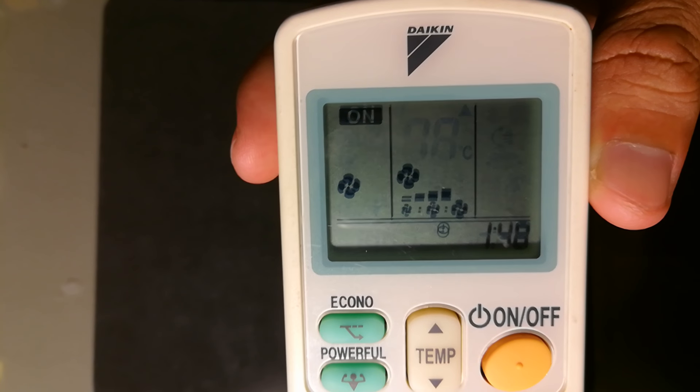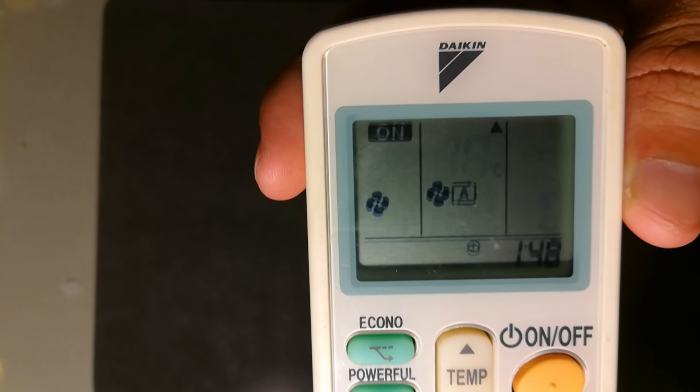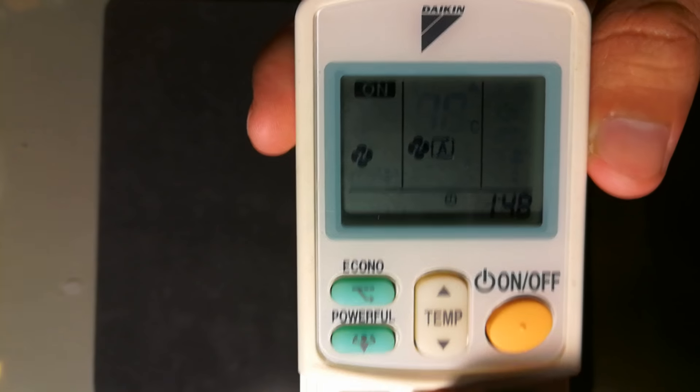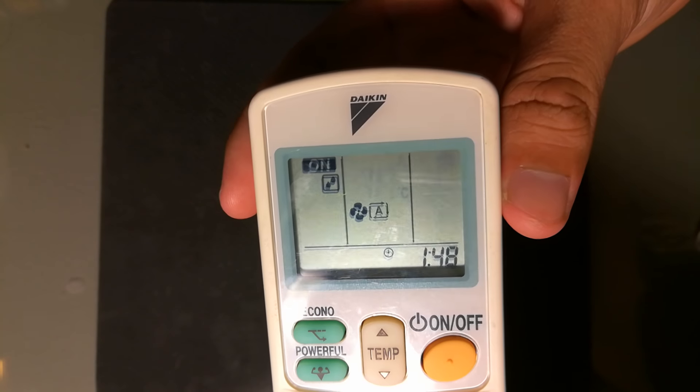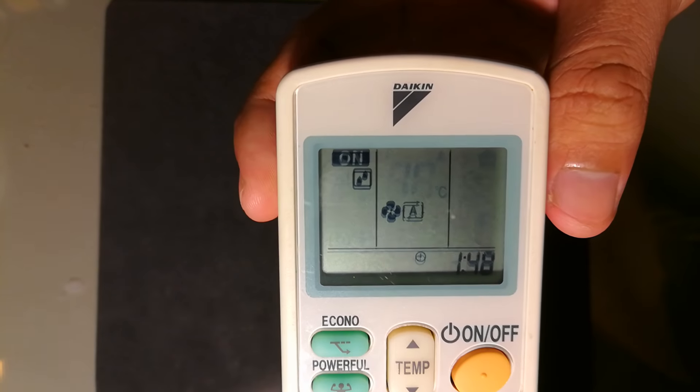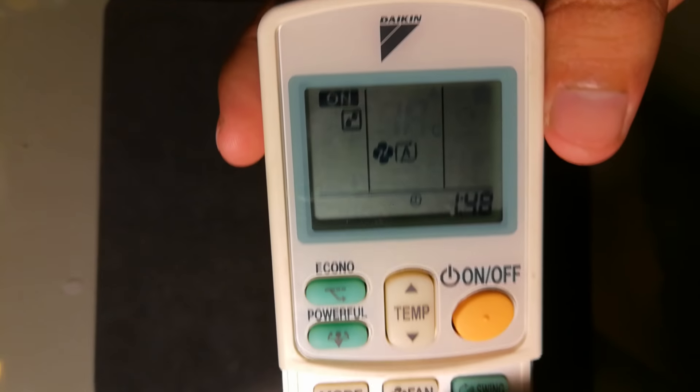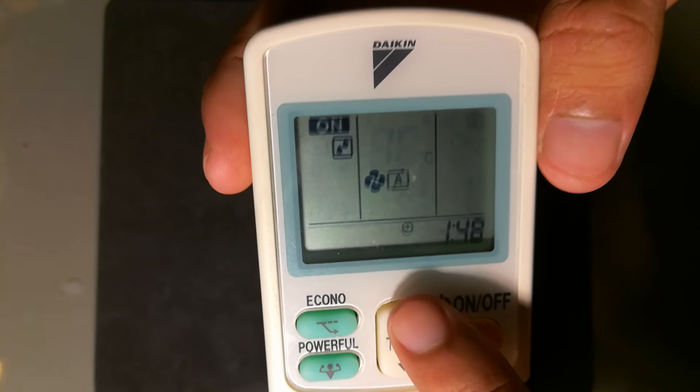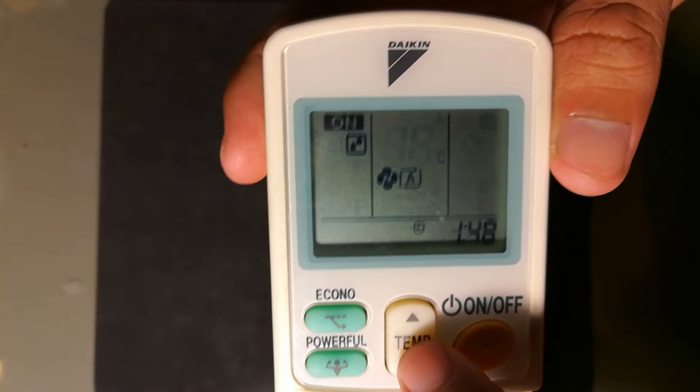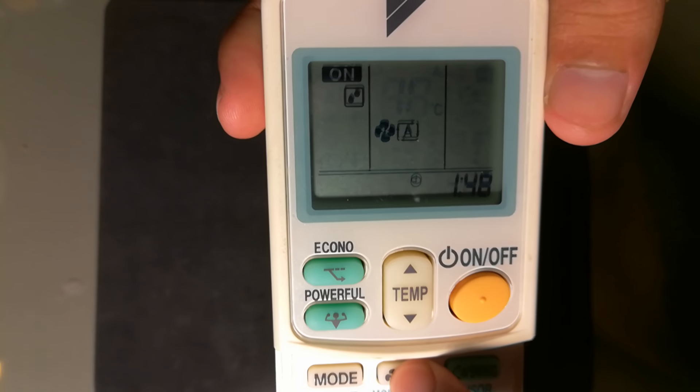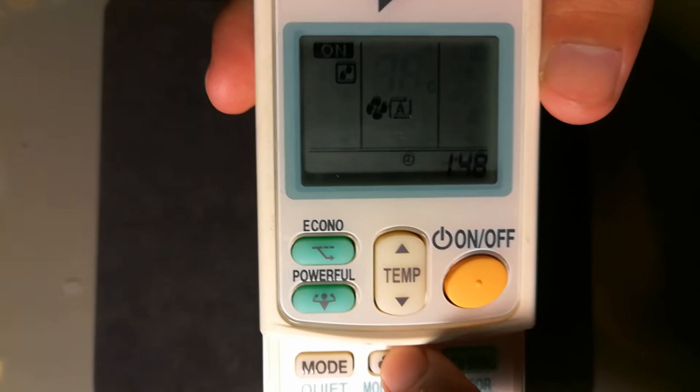Another mode is dry mode. This function removes the humidity from your room - that's why it has the water drop logo. The temperature cannot be adjusted in this mode. The fan speed also cannot change - it remains on auto mode.